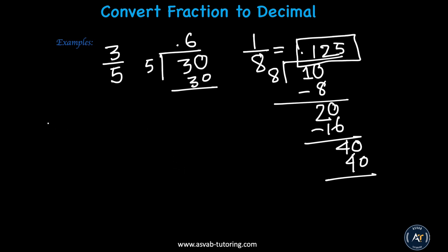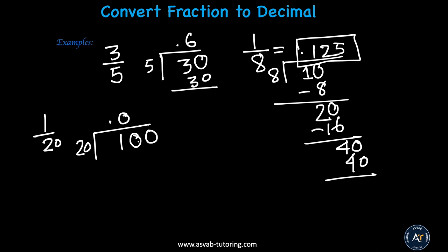Let's do another one: 1 over 20. Divide the same way, 20 into 1. You cannot divide 1 by 20. Put a decimal, get a 0. You still cannot divide 10 by 20. So you need to put a 0 on top first, then bring another 0. Now you can divide 100 by 20. How many times does 20 go into 100? 5 times.